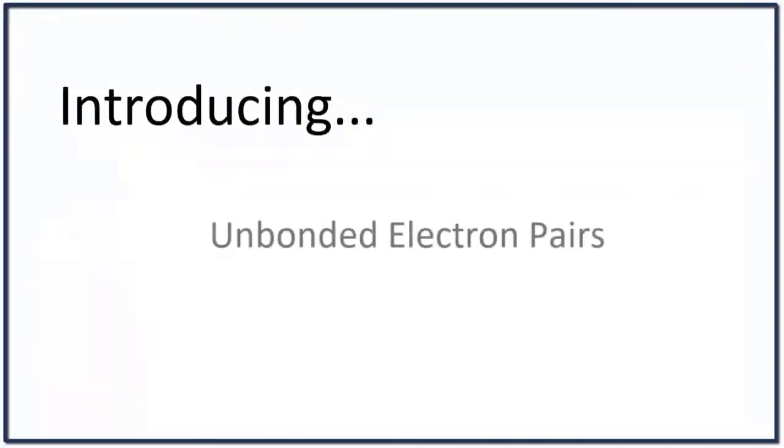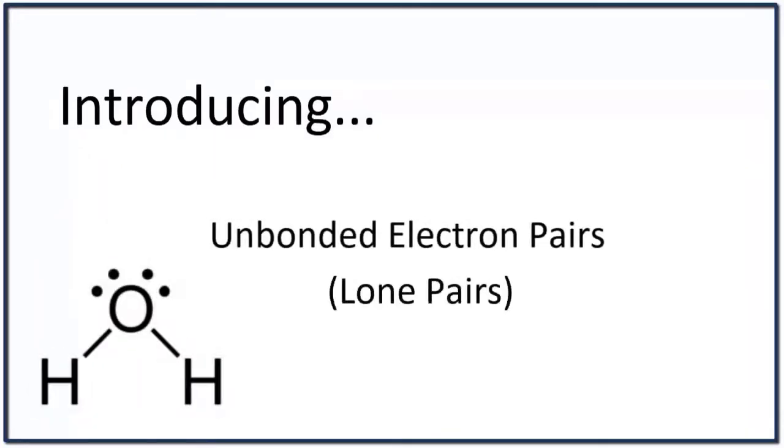Up until now, we've only talked about electrons that are between atoms. They're bonded electron pairs. We also have pairs of electrons that are called unbonded electron pairs, or lone pairs. They are not in between atoms, but they do have their own orbitals. And that means they influence the shape, the polarity, and the symmetry of a molecule.